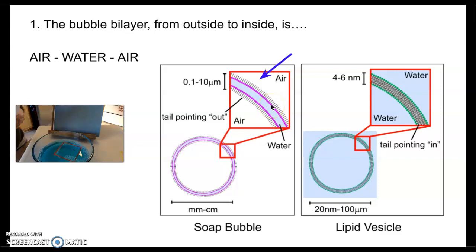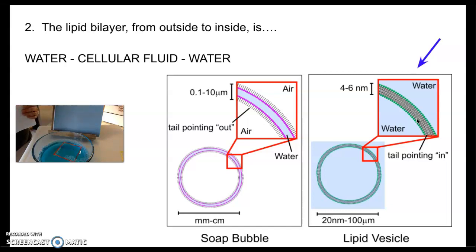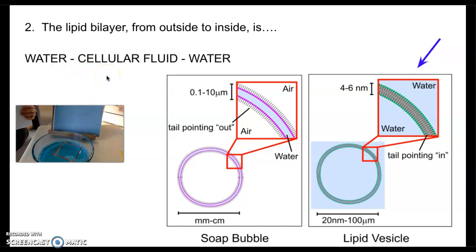What about lipids? Lipids are opposite. If you look at the structure, all of the tails are on the inside and all of the heads are on the outside. So it makes sense that water is on the outside, and from outside to inside it goes: water, then instead of air, it's called cellular fluid, and then water again. They both trap materials inside because of this lipid bilayer.